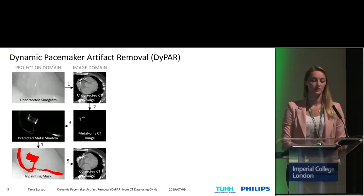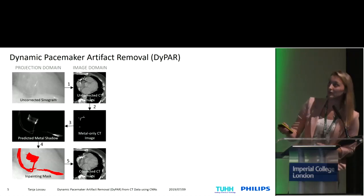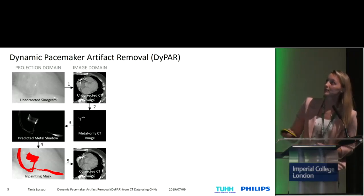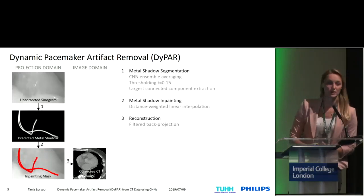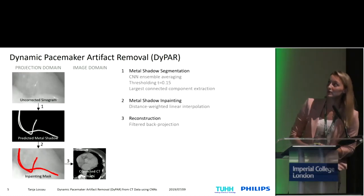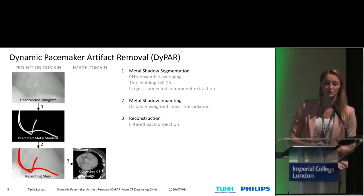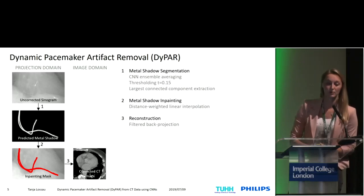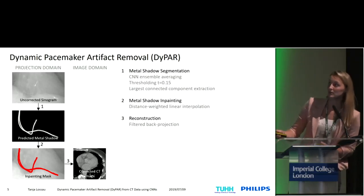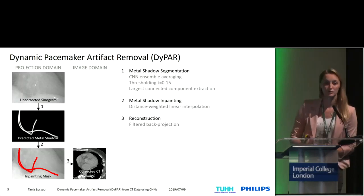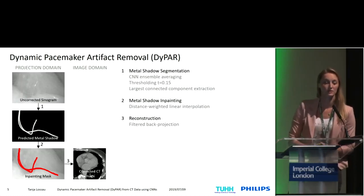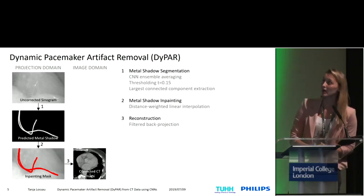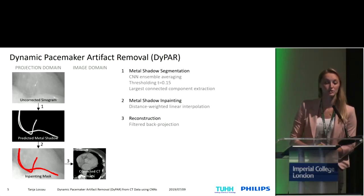So how is the existing pipeline adapted? Instead of performing this detour over the image domain, we want to directly perform the metal shadow segmentation. This is where machine learning comes in. We train convolutional neural networks to perform this metal shadow segmentation. The resulting outputs are then post-processed by thresholding and largest connected component extraction to obtain a binary in-painting mask. In this first stage, we performed distance-weighted linear interpolation as our in-painting strategy, and for the reconstruction we applied filtered back projection, either ECG-gated or ungated depending on the data.